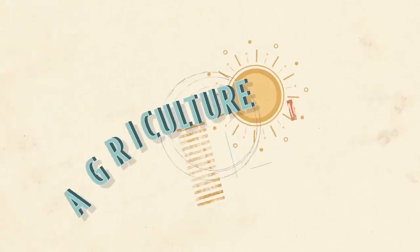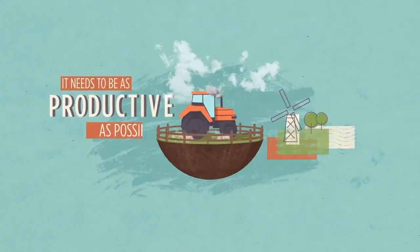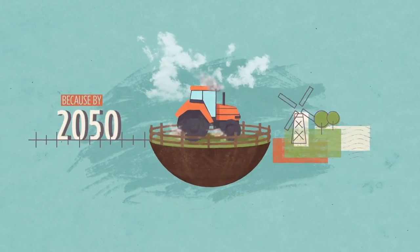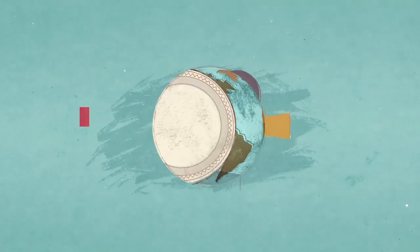So you see, agriculture is more than planting a seed. It needs to be as productive as possible, because by 2050 there will be 2.5 billion more people, and they need to eat.